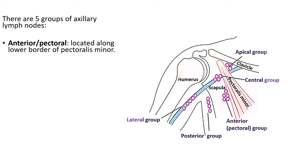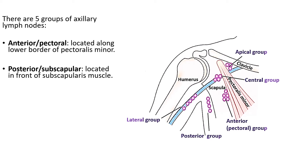The posterior or subscapular group, which we can see here, lies along the subscapular vessels, placed close to the lateral border of the scapula on the inferior border of the subscapularis muscle. These are easy to remember as they are associated with the subscapular vessels.